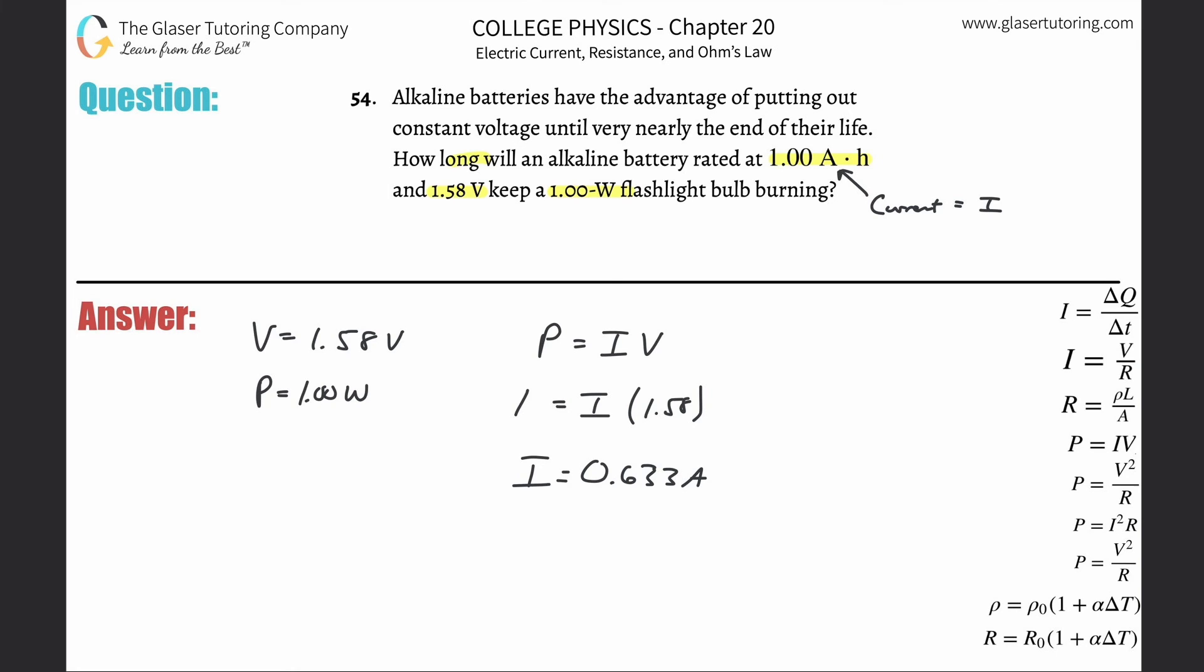Look at that. So now I found the current in amps. Now what I'm going to do is take my one amp hour. Remember the battery has the ability to produce a full amp over a full hour. However, we realize that the current flowing through this particular flashlight is only going to be 0.633 amps.